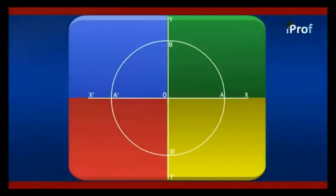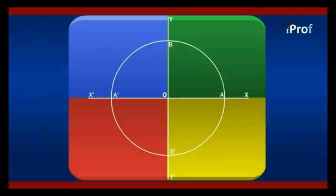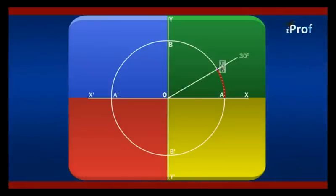When we take up a circle, this is the origin, this is OX — the starting point — and this is the Y-axis. Suppose the radius is A. We take this to be 30 degrees, and we take a unit circle. Unit circle means OA is equal to 1 unit, and P is at 30 degrees.